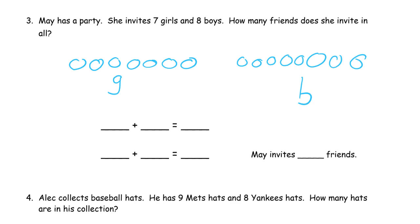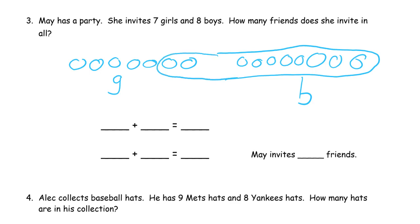And by now you know, if you've got 8 in one group, you need 2 in the other, because that's how they've all been so far. They've all had 8s in them and we've been looping in those 2. So we started out with 7 girls and 8 boys. Now we have a larger group of 10 — that's the group that we circled. 10, and there's 5 outside of it. 10 plus 5 is 15. So 7 plus 8 is also 15, because it's the same number of circles that we drew — the same number of friends. So she invites 15 friends.